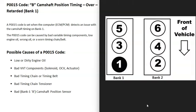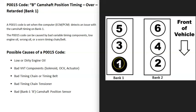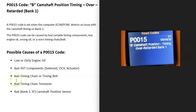If you have a V6 or V8 engine, there are going to be two banks. Bank one is always the side of the engine with the number one cylinder, and the opposite would be bank two. So if you find the number one cylinder on your engine, that's bank one, and the opposite is bank two. Bank one is the side the computer is seeing a problem with. If you have a four-cylinder engine, you'll only have one bank.